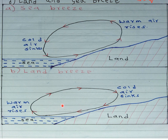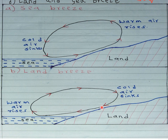In land breeze, which occurs at night, the movement of air is in the clockwise direction. Clockwise means it moves in the same direction as a clock, while anti-clockwise means the opposite direction, as seen in the sea breeze.